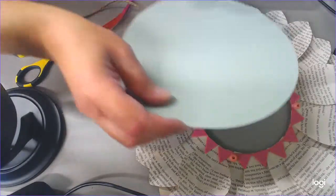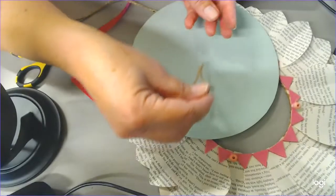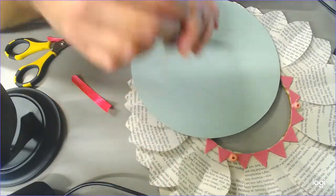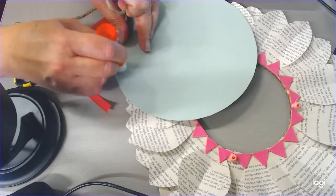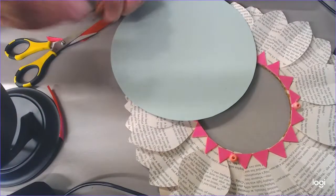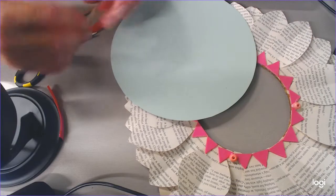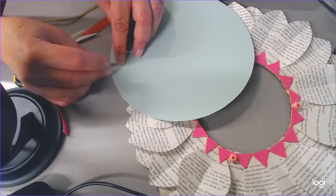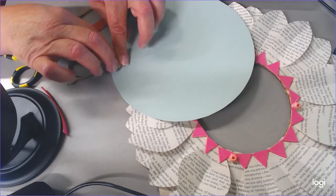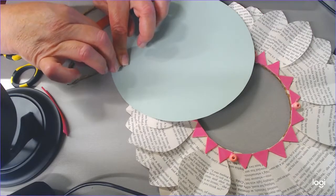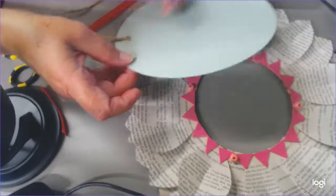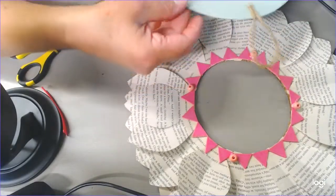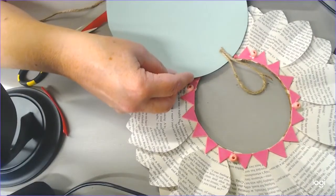You're going to take this small piece of twine and the back of your wreath, and you're just going to put some glue and just hold it for a while so that it sticks.